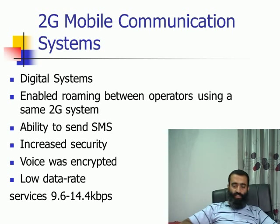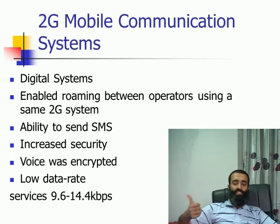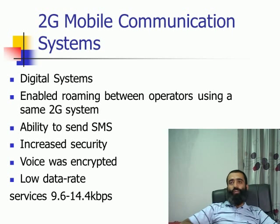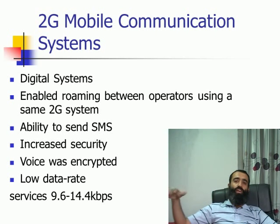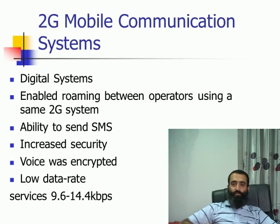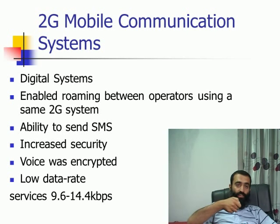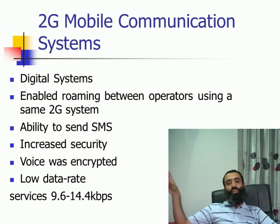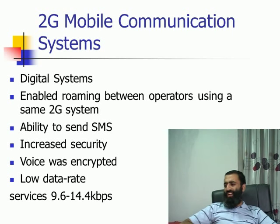With 2G, the possibility of roaming was there. For example, there is an operator in Canada which uses a GSM system and a subscriber of this operator goes to the United States of America. If there is a 2G system of another operator in the United States, and if the two operators had an agreement between them, then it was possible that using the same mobile phone and SIM card used in Canada, the subscriber was able to use it in the United States of America — of course at a different tariff.